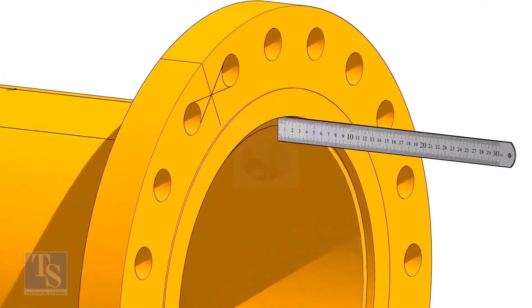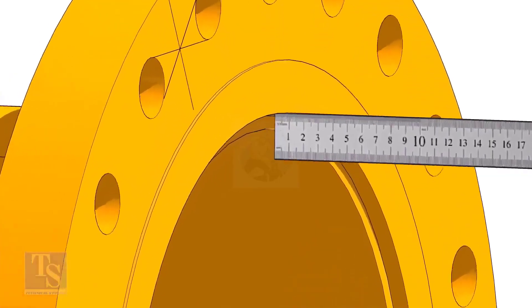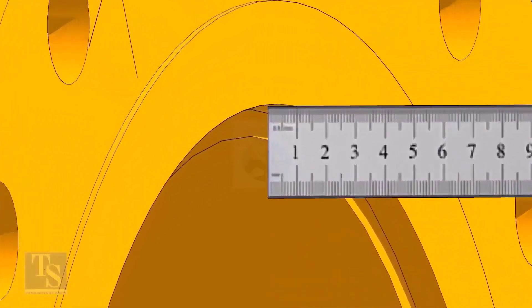Fix the distance between the flange face and the pipe face. Usually, this measurement is equal to the thickness of the pipe.